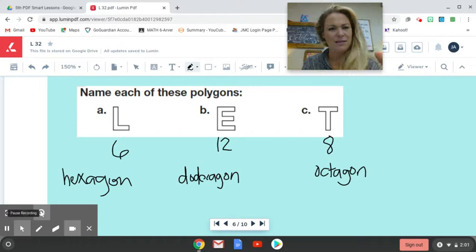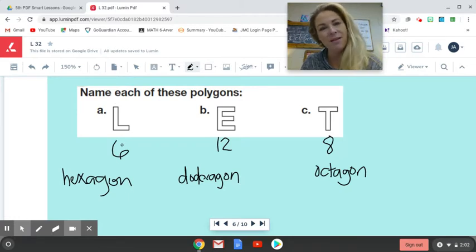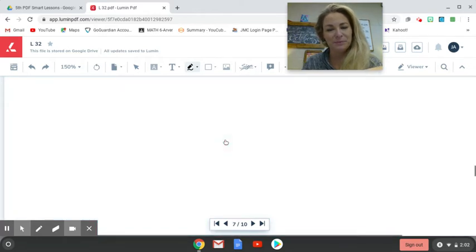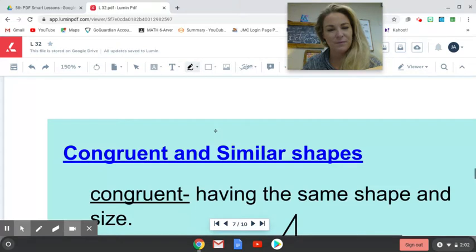So I apologize for my terrible handwriting. It's kind of hard to do with this fat stylus pen. I've counted the number of sides for each of these letters. For A here, I have counted six sides and I know that a polygon with six sides is called a hexagon. I always associate that X with six. B, I counted up the sides in this shape that looks like an E and I got 12 sides. A polygon of 12 sides is a dodecagon. And then this last one that looks like a T, I counted up the sides here. I got eight sides and a polygon with eight sides is called an octagon.